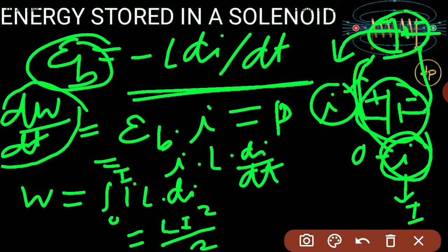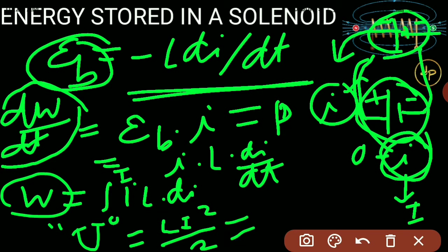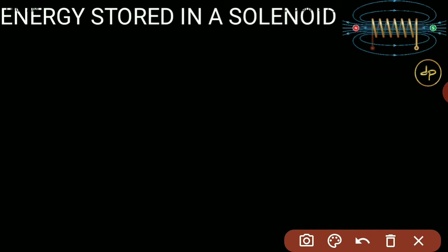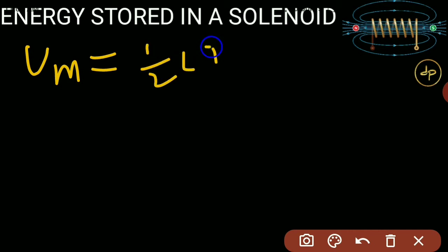So the work done equals LI²/2. This work done to establish current I is stored as magnetic potential energy, represented by capital U, also written as U_M — magnetic potential energy. This potential energy is in the form of the magnetic field B inside the space of the solenoid.